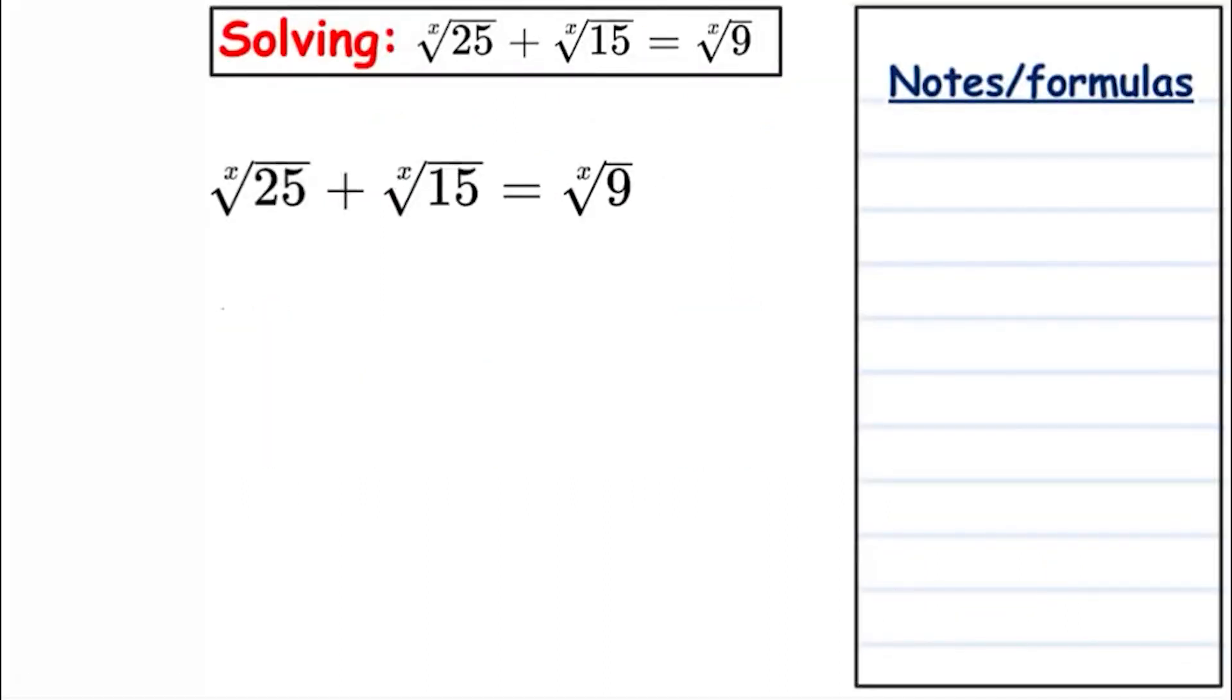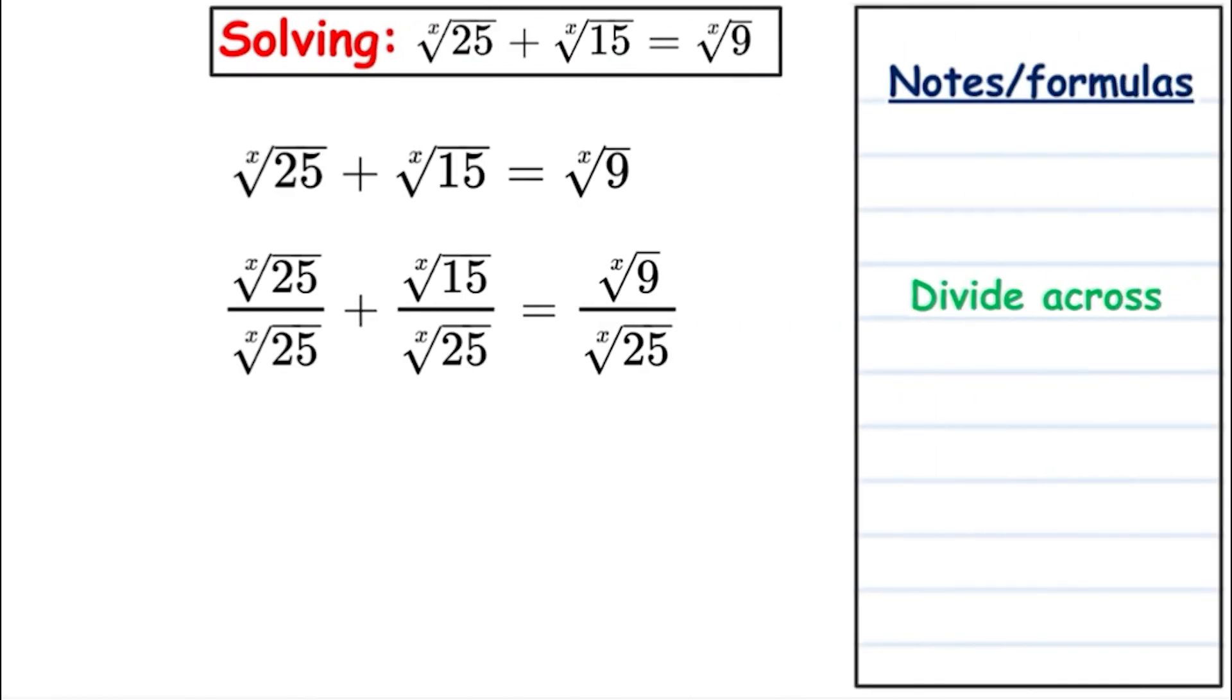So let's get started. We have 25, 15, and 9, all to the x root. We're going to choose one of these and go with the square root of 25. We're going to divide across the board into each term to obtain a simplification. Now that we have them divided across, we can cancel this out and get one. For the second part, we're going to merge these together into the same root as it's the root x above and below.